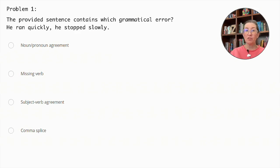Problem number one. The provided sentence contains which grammatical error? He ran quickly, he stopped slowly. Options: Noun pronoun agreement, missing verb, subject verb agreement, or comma splice.